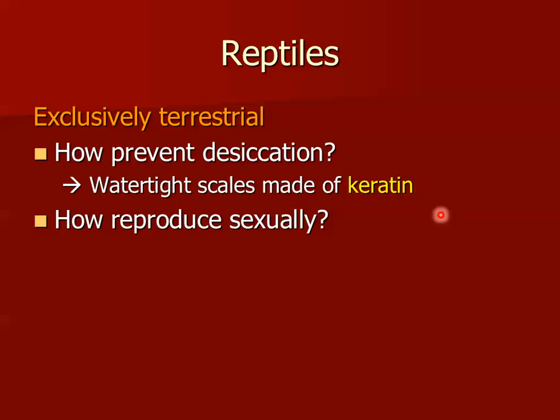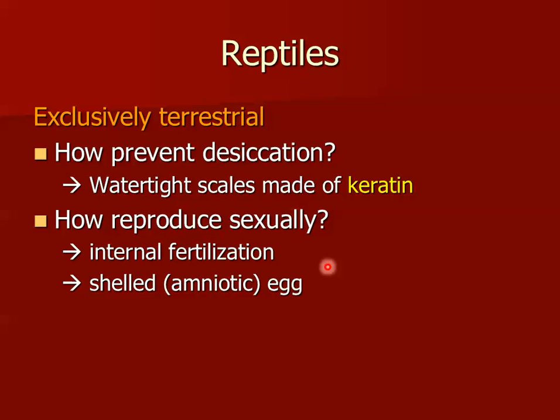How do they reproduce sexually without a body of water? They have internal fertilization, so they don't need to mate in a pond or a stream. The sperm swim through the fluid of the female's body to fertilize the egg, and then the embryo is wrapped up in a shell — the amniotic egg, also called the shelled egg — as opposed to the amphibian egg, which will not prevent desiccation.